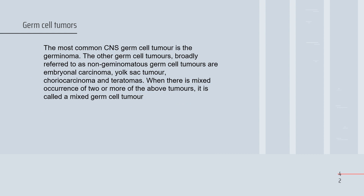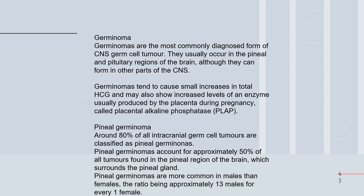The most common CNS germ cell tumor is the germinoma. Other germ cell tumor types include non-germinomatous germ cell tumors, embryonal carcinoma, yolk sac tumor, choriocarcinoma, and teratoma. When mixed occurrence is present, it is classified as a mixed germ cell tumor. Germinomas are the most commonly diagnosed form.